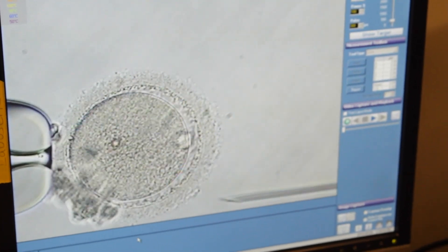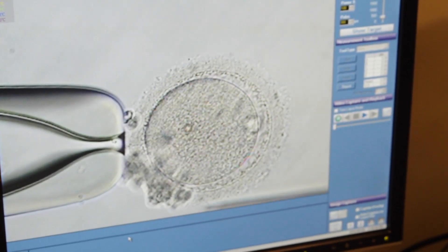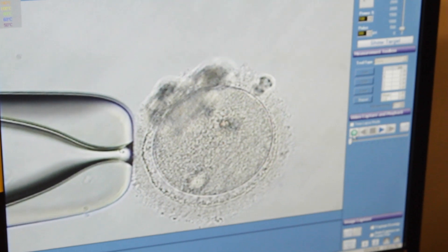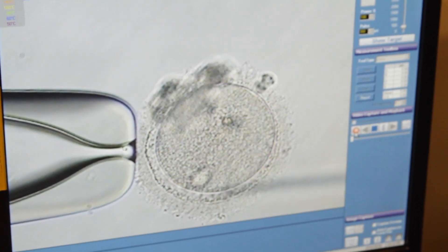Orientation of the oocyte on the holding pipette is very important. Data within our lab has shown that we get the best results when holding the polar body at a seven o'clock position.